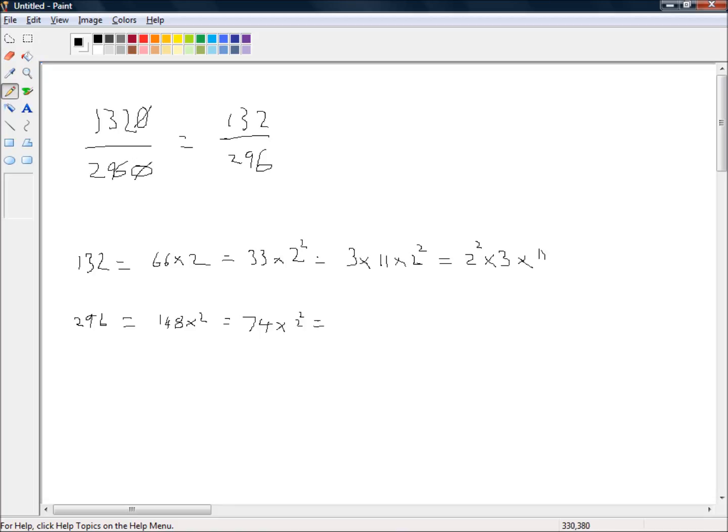74 is also an even number, so that will also divide by 2. So that's 37 times 2 cubed. And 37 looks to me like a prime number. Yeah, I can't think of anything that will divide 37 evenly. So let's take that as a prime number.